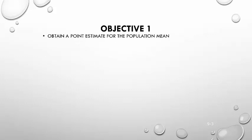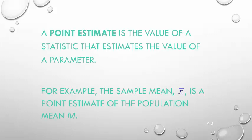So let's do objective one: obtain a point estimate for the population mean. A point estimate is the value of a statistic that estimates the value of a parameter. A statistic is a value calculated from a sample, and a parameter is a value calculated from a population. But often in the real world, we can't know all the values in a population, so we use a sample to estimate them — and that's where we get our statistics from.